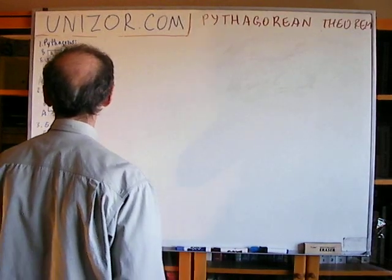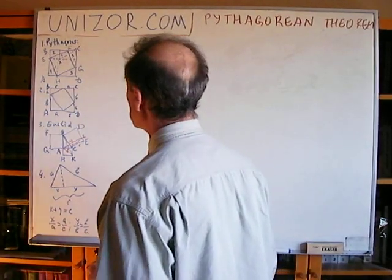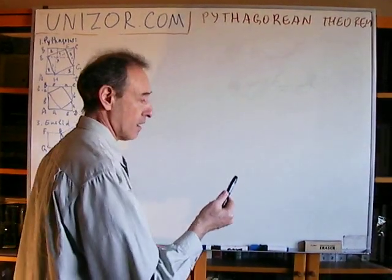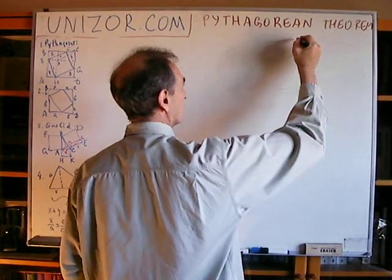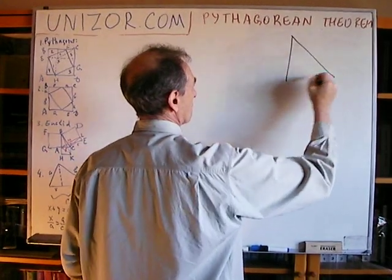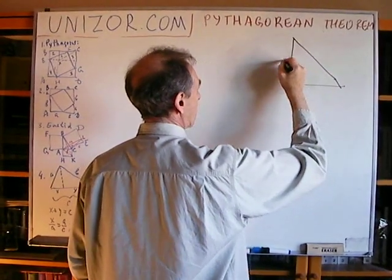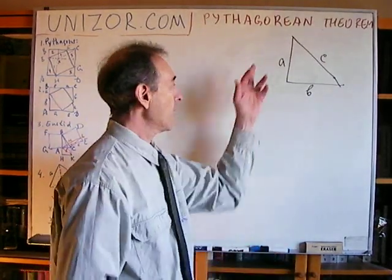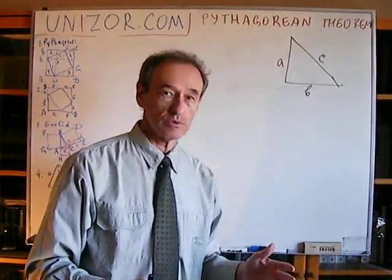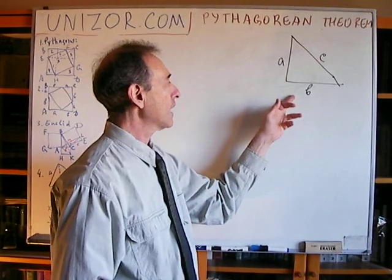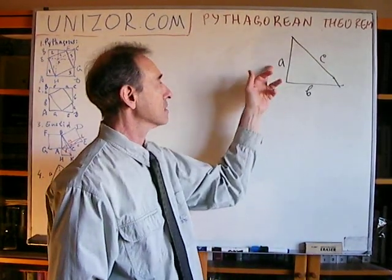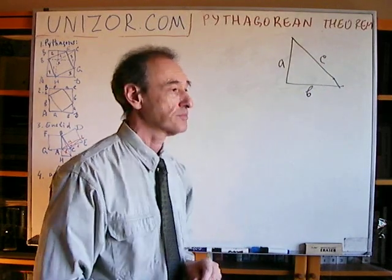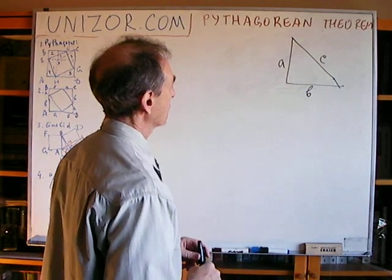Without further ado, let me get to all these proofs. Here they are, one by one. First of all, what I actually mean is this: you have a right triangle A, B, and C — or whatever letters you use. These are two catheti, two legs, and the hypotenuse, and the sum of squares of these two legs is equal to the square of the hypotenuse.